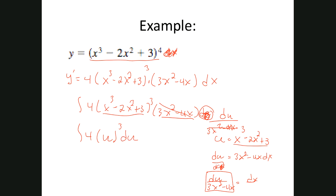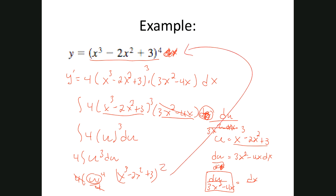When you use u-substitution, if you end up with an x remaining, something is wrong - you can only end up with u's. So taking the integral of 4u cubed: I put the 4 on the outside, integrate u cubed to get u to the fourth over 4, and those 4s cross out. I plug my u value back in: x to the third minus 2x squared plus 3, all raised to the fourth power. Lo and behold, that is the exact same thing I started with. When you use u-substitution, you should get the original function back.